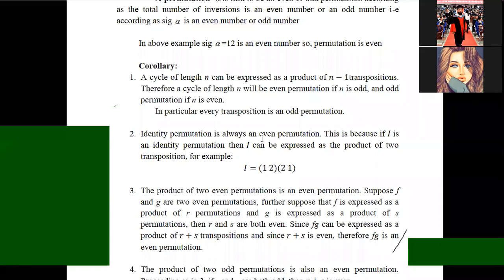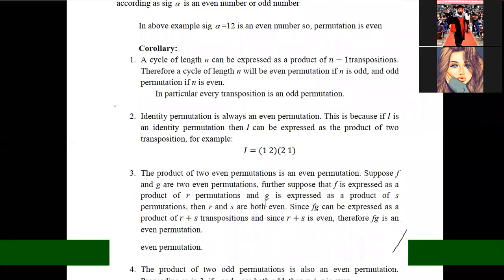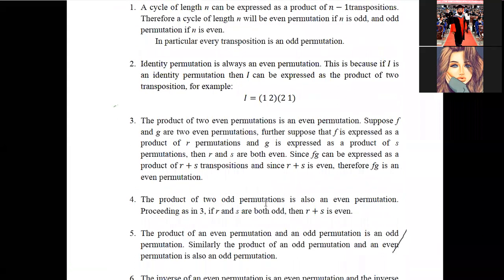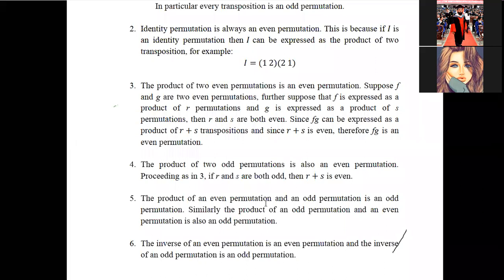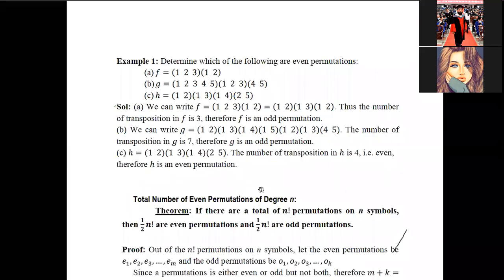The product of two even permutations is again an even permutation. The product of an odd permutation and an odd permutation is an even permutation. The product of an even and an odd permutation is an odd permutation. The inverse of an even permutation is an even permutation, and the inverse of an odd permutation is always an odd permutation. So if alpha is even, alpha inverse is even; if beta is odd, beta inverse is odd.